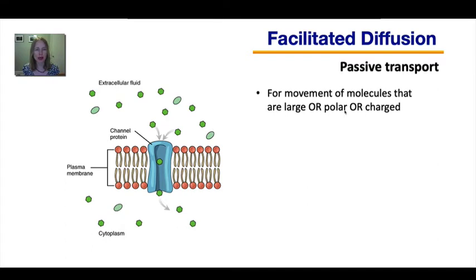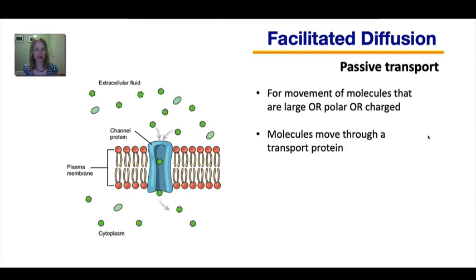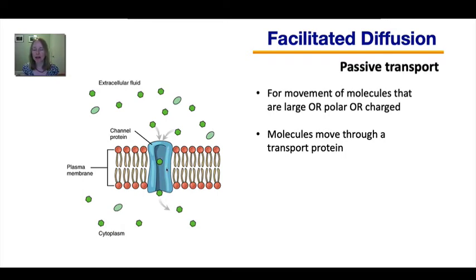If molecules are either too big, polar, or charged, they can't use simple diffusion — so facilitated diffusion is how they can get across the membrane. To facilitate means to help something along, so this is a diffusion facilitated with the help of a transport protein. Those transmembrane proteins — some of them function as channels that allow molecules to move across.